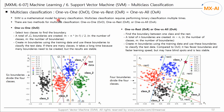SVM is a mathematical algorithm for binary classification. SVM doesn't support multi-class classification natively. Multi-class classification requires performing binary classification multiple times. Binary classification in SVM is when the class Y is either positive 1 or negative 1. Multi-class classification is when there are multiple classes Y, such as 0, 1, 2 and so on.